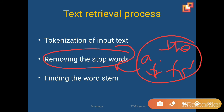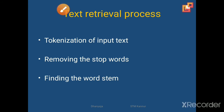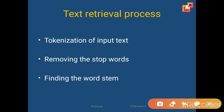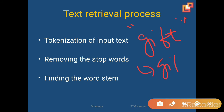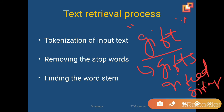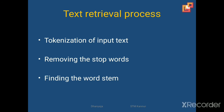After removing the stop words, we have to do the stemming — finding the word stem. For example, if we have the word 'gift', there will be different variations like 'gifts', 'gifted', 'gifting'. All these are variations of the word gift. While doing word stemming, we find the root word from all these variations — 'gift' is the word stem. So we have to tokenize, remove the stop words, and find the word stem to do the text retrieval.